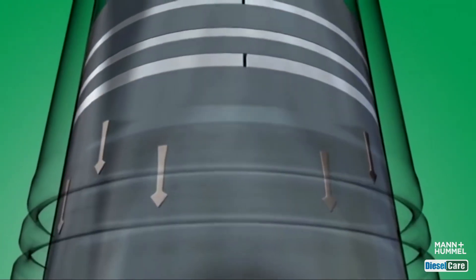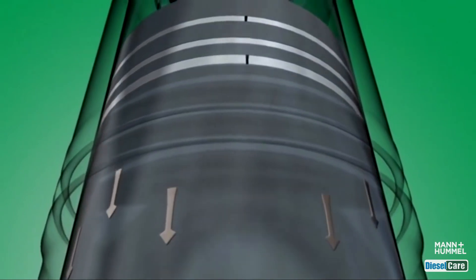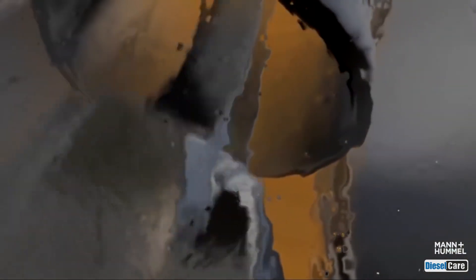Leakage between the piston rings and liners causes combustion gases to enter the crankcase. These gases, which come from the combustion process, have a composition similar to exhaust gas. They are called blow-by gases.